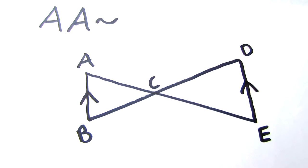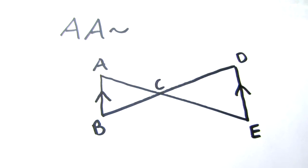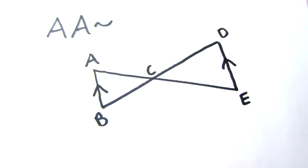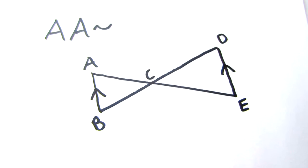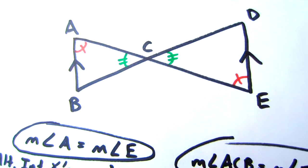For the last example, you see angle angle similarity. Now not all the time will you have a triangle give you all the information. Sometimes you have to use theorems to figure out the angles.